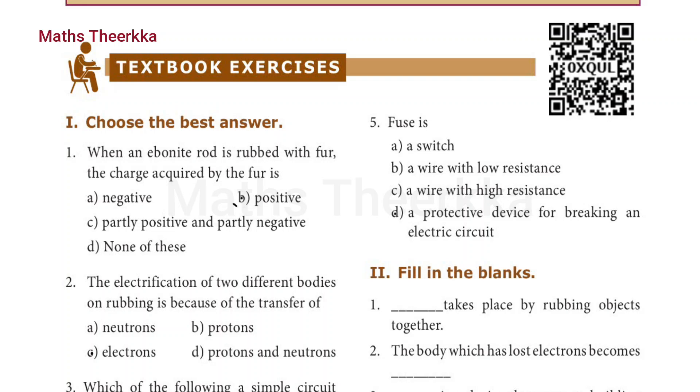8th standard science unit 5 electricity textbook exercises. First, choose the best answer. First one: when an ebonite rod is rubbed with fur, the charge acquired by the fur is b) positive.